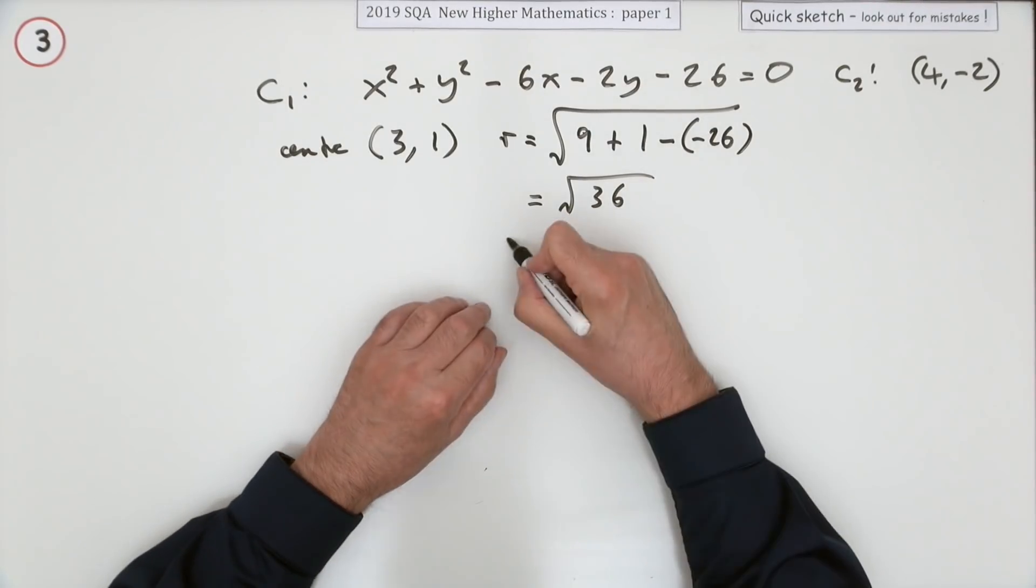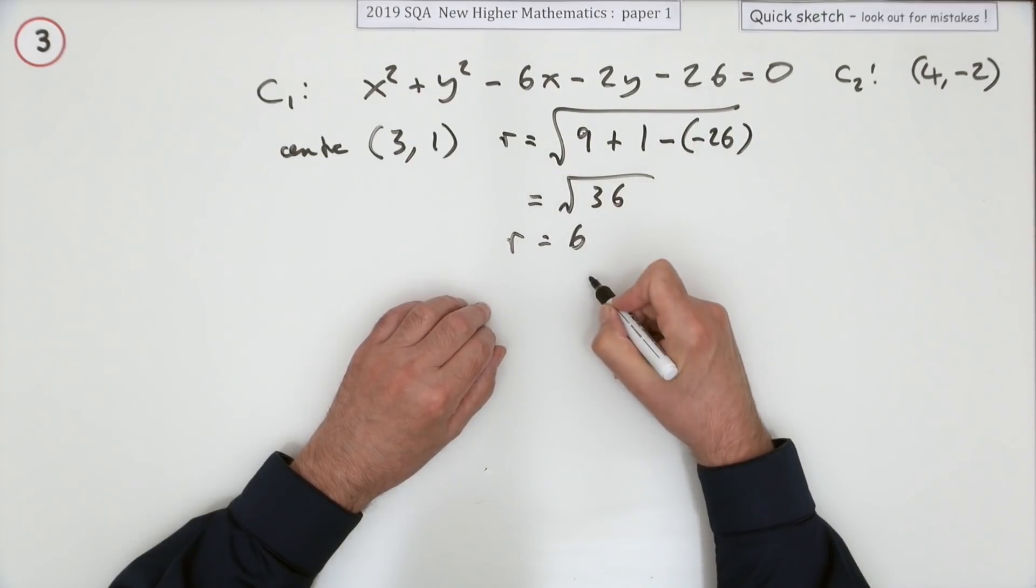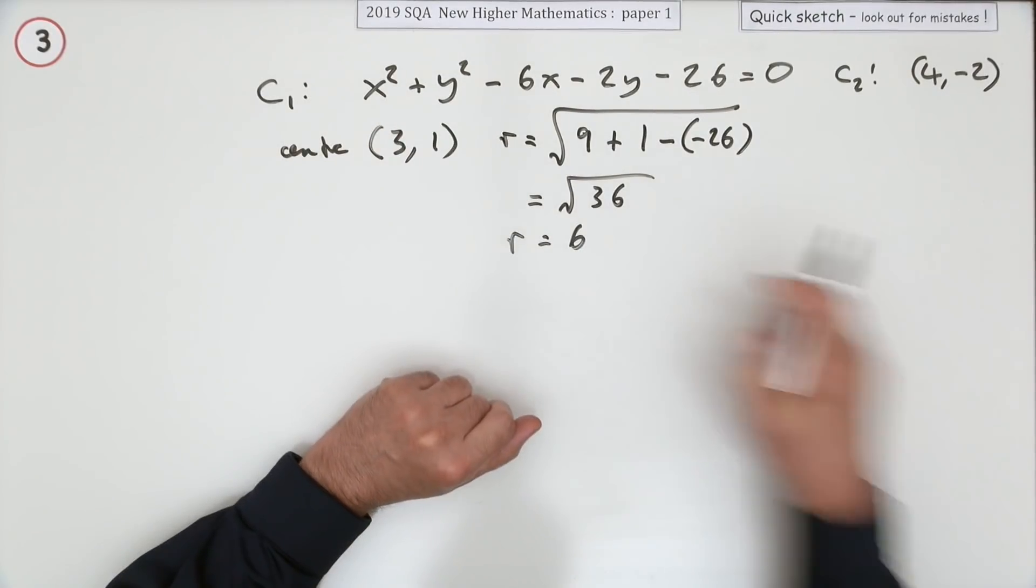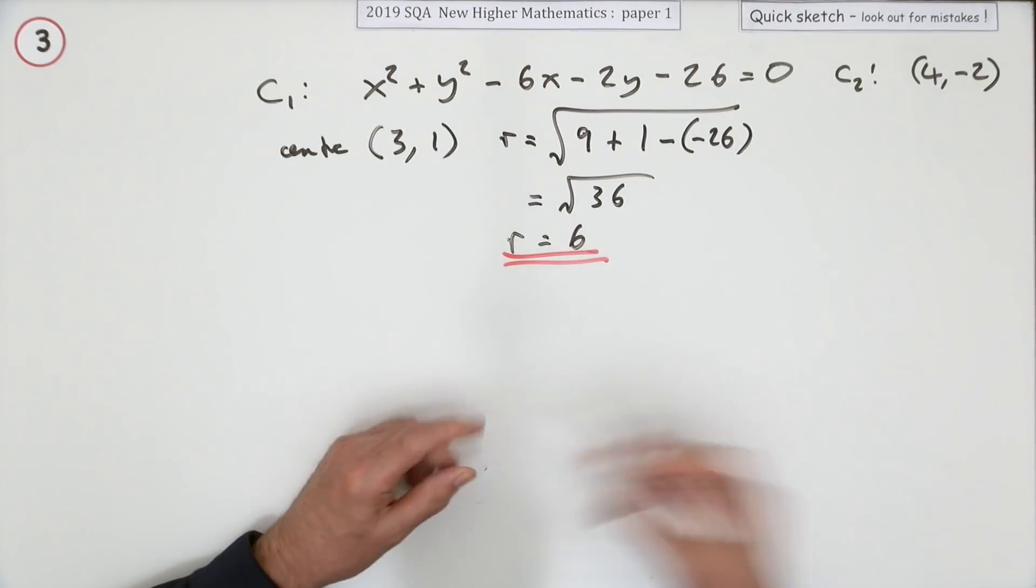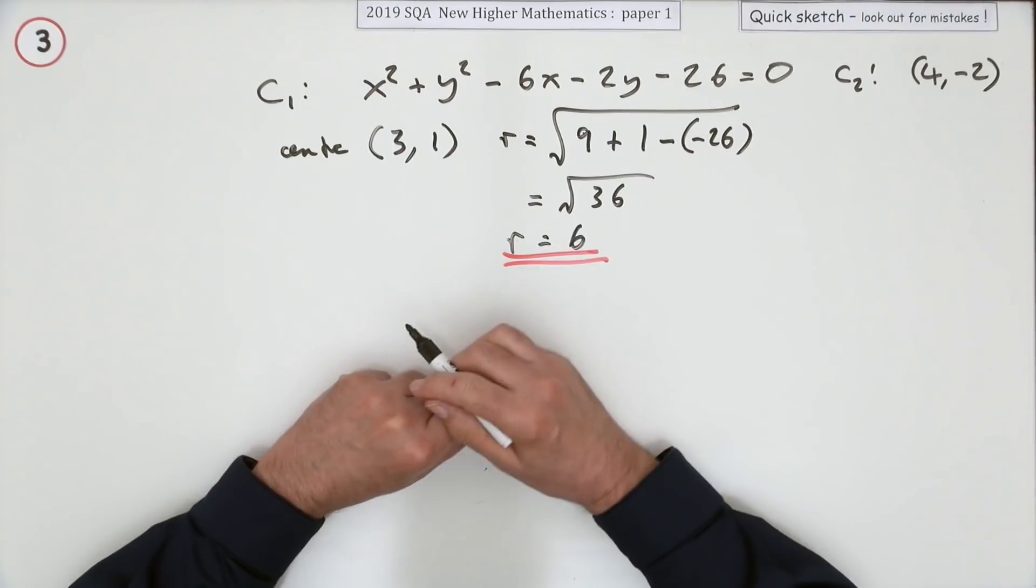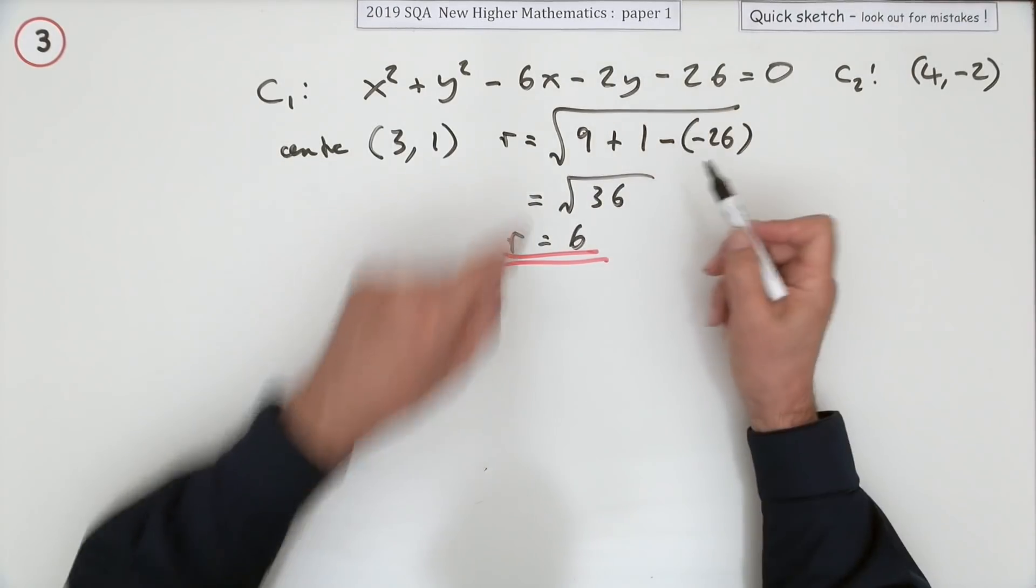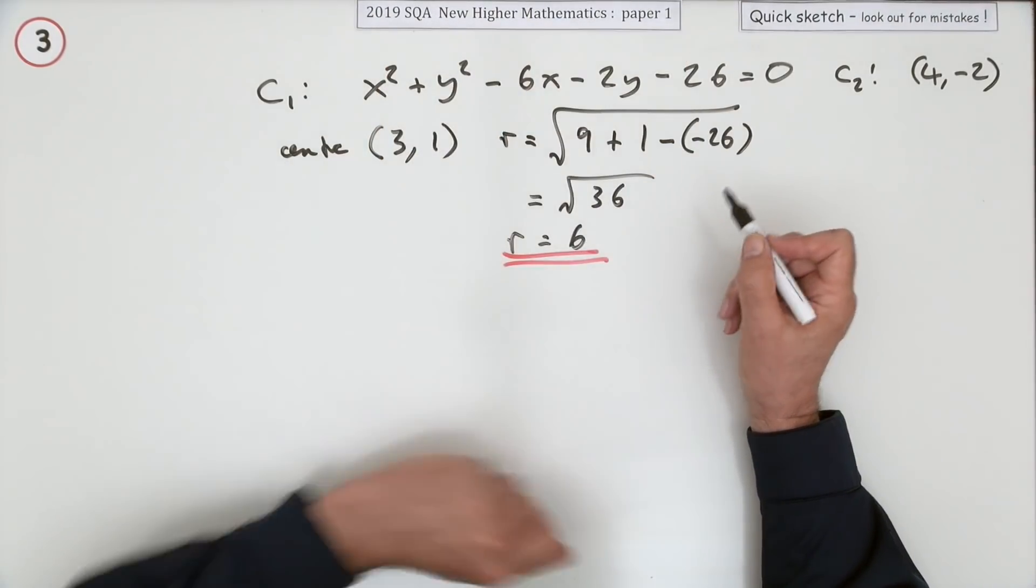But then again, I've done it now. So it's 6. The radius of that circle is 6. Now that would have been, I presume, just the first mark and you had to do two things to get to that. Or maybe you didn't if you were using your f's and g's and identifying f, g and c from that.